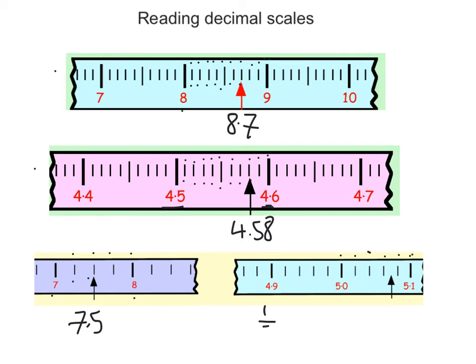Now if you remember, a fifth is the same as saying 0.2. So we've got 5.0. So each one of these is worth two hundredths.